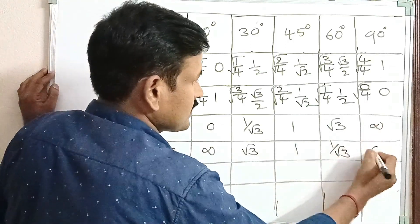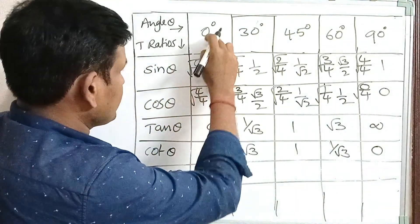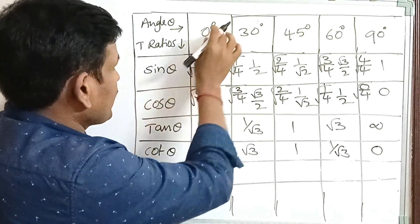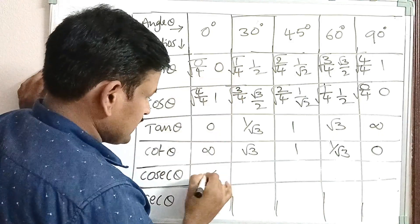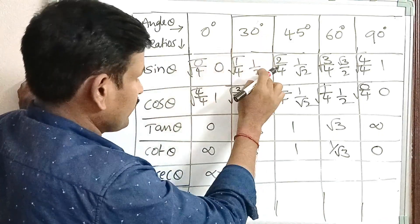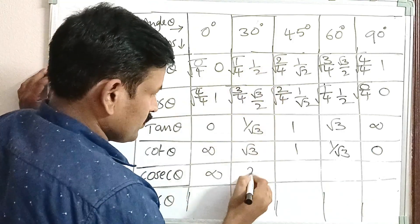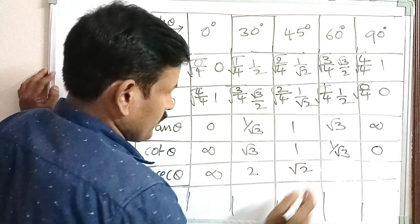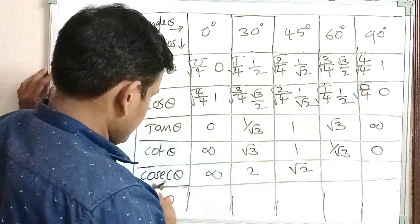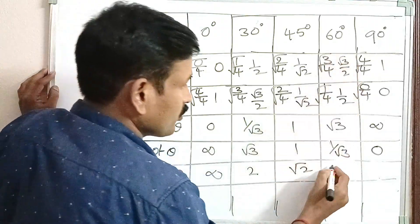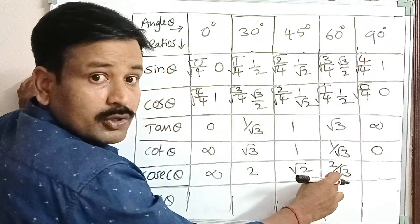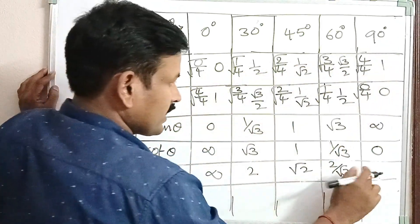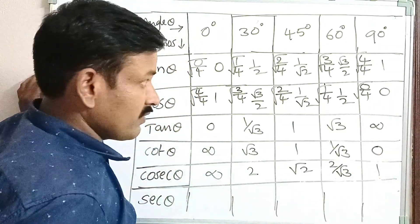Cosec theta is the inverse ratio of sin theta. Sin 0 is 0, so cosec 0 is infinite. Sin 30 is 1 by 2, so cosec 30 is 2. Cosec 45 is root 2, since the inverse of 1 by root 2 is root 2. Sin 60 degrees is root 3 by 2, so cosec 60 is 2 by root 3. Sin 90 degrees is 1, so cosec 90 is also 1.